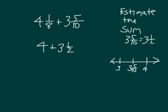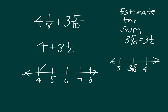We can use a number line to show what happens when we add 4 plus 3 and 1 half. We add the whole numbers first — going 4, 5, 6, 7 for plus 3 — and then we still have to go another half. So the plus 1 half puts us at 7 and 1 half. Our estimated sum is 7 and 1 half. Remember, the sum is the answer to an addition problem.